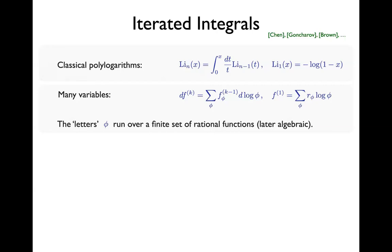In the Li_n(x) example, the rational functions would just be x itself and 1−x, because Li₁ = −log(1−x) so I need 1−x, and d log x appears in the integral. So the letters in that example are just x and 1−x. More generally, given some set of variables, I can specify my own alphabet of letters φ — rational functions, or later algebraic ones.